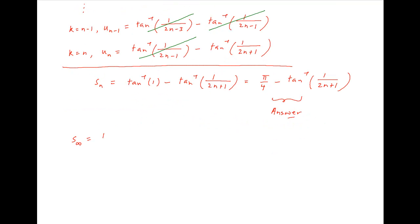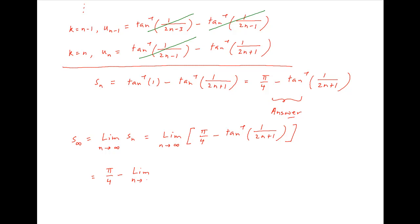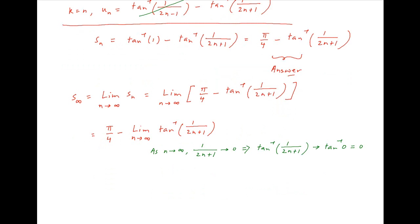Now, to obtain the sum to infinity, we take the limit of Sn as n tends to infinity. This is equal to the limit of pi upon 4 minus tan inverse 1 upon 2n plus 1 as n tends to infinity, which is equal to pi upon 4 minus the limit as n tends to infinity of tan inverse 1 upon 2n plus 1. As n tends to infinity, 1 upon 2n plus 1 tends to 0, and therefore tan inverse 1 upon 2n plus 1 tends to 0 as well. Therefore, the sum to infinity is equal to pi upon 4, which is the required answer.